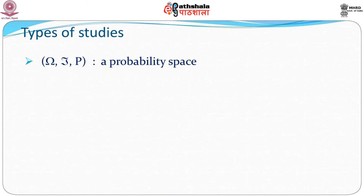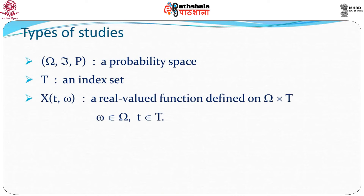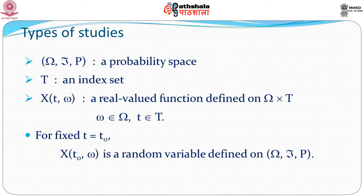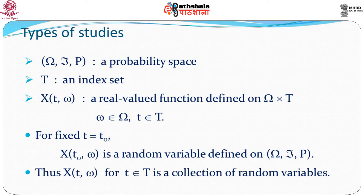Let us look at this in more detail. We have a probability space (Ω, F, P) and let T be an index set. We define a real-valued function x on Ω × T, where ω belongs to Ω and t belongs to T. For a fixed t = t₀, x is only a function of ω and we call it a random variable defined on the probability space (Ω, F, P). Thus, for t belonging to T, we have a collection of random variables.